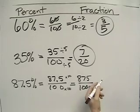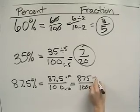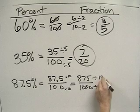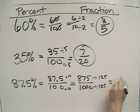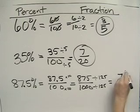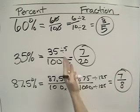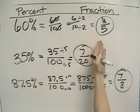Now we've gotten rid of the decimal, now we need to reduce. And we can reduce both the numerator and the denominator by 125. And if we do so, we'll end up with 7 eighths. And that's how you turn a percent into a fraction.